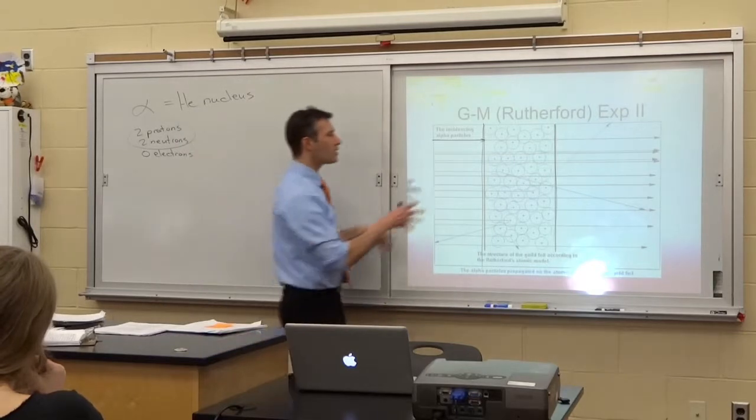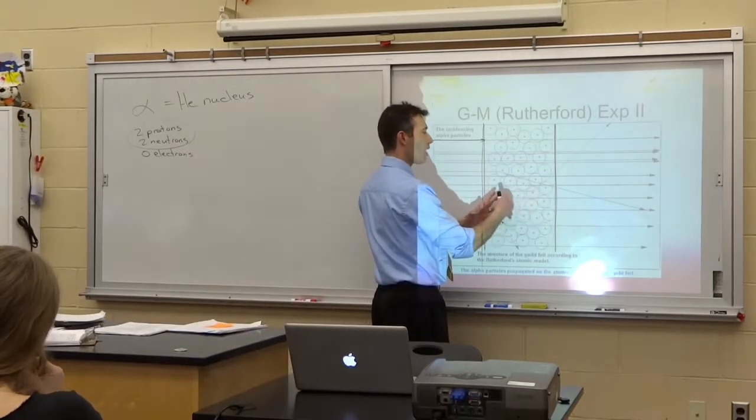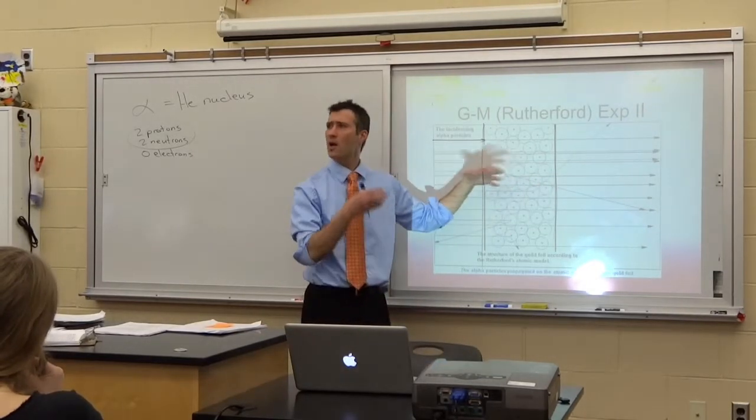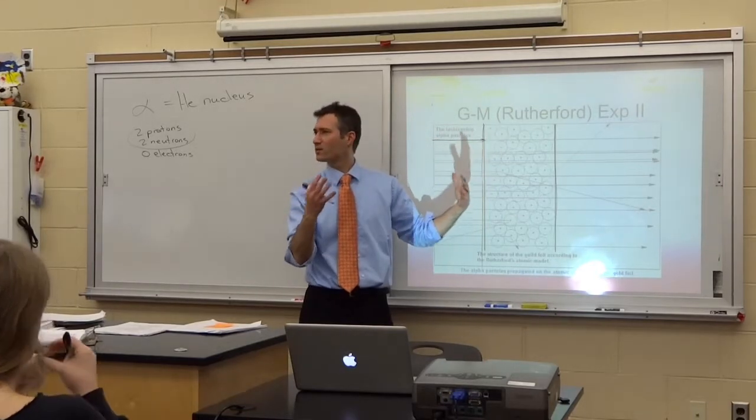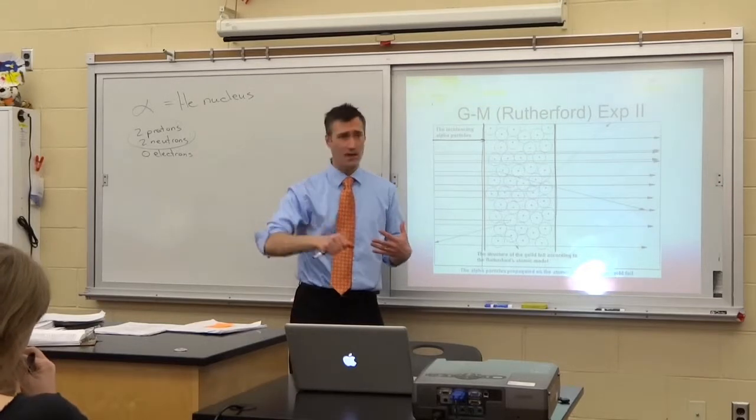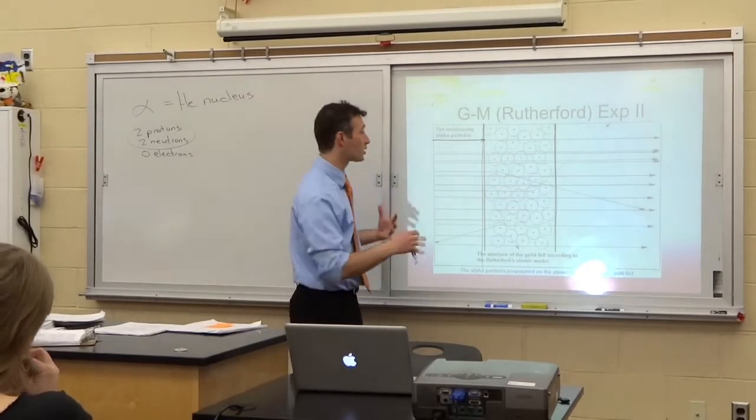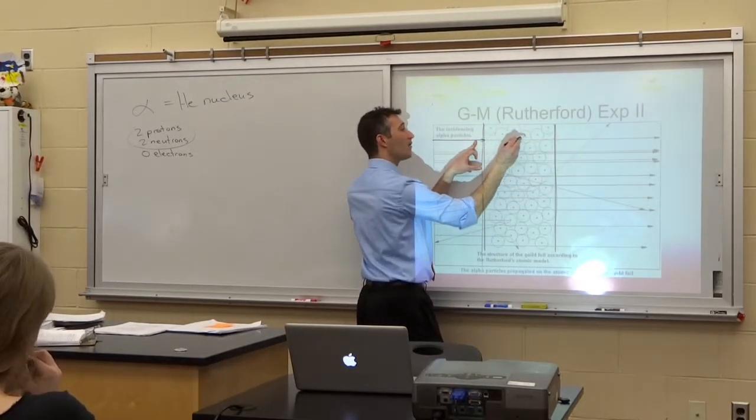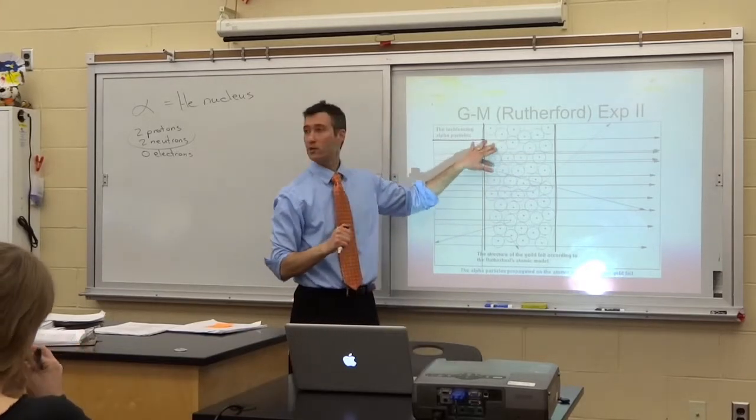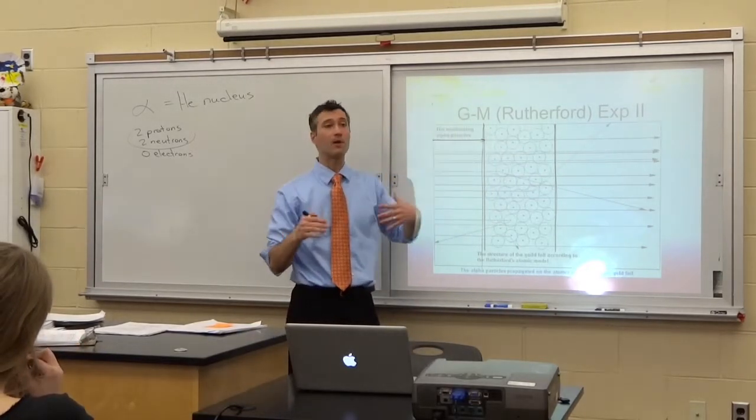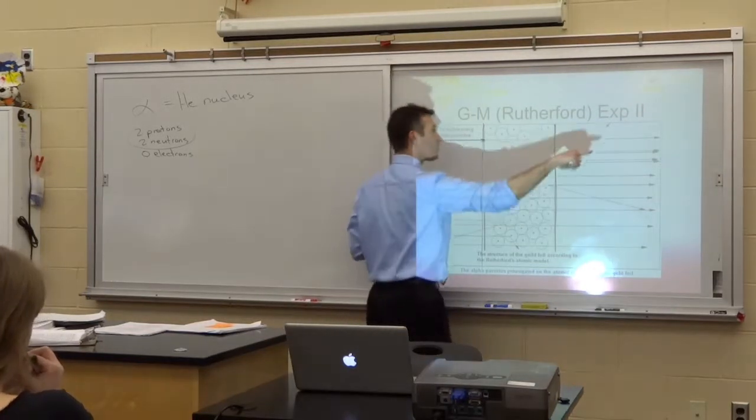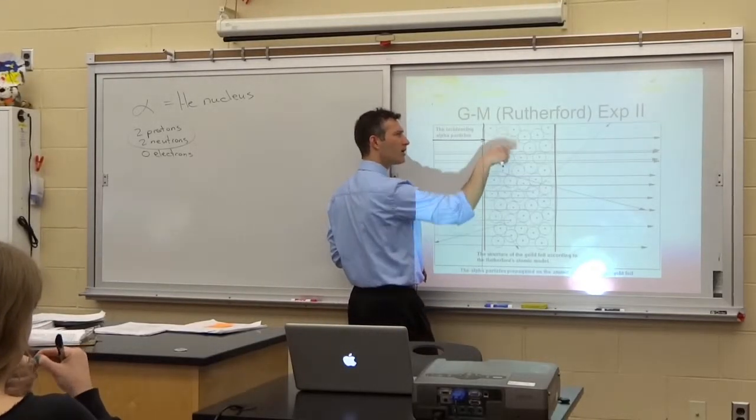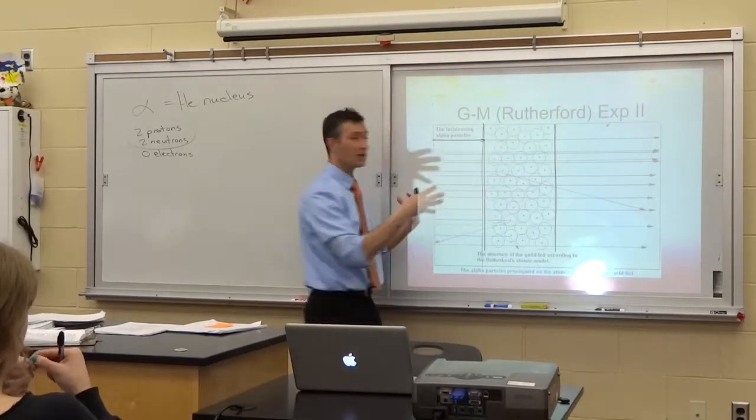And then in this diagram, we're shooting the alpha particles this way, at the gold foil from this direction. This is probably a slight underestimation of the number of atoms across that the gold foil had. This shows about six atoms across. It's probably more like maybe 20. So very thin. That's why they use gold. Because gold is super valuable. And you can bang it super, super, super thin with almost no technology whatsoever.